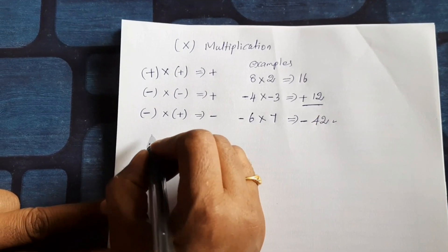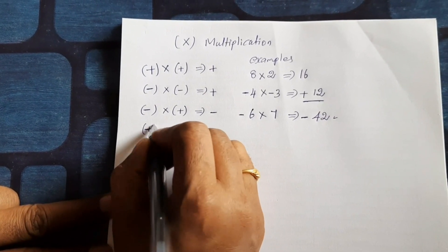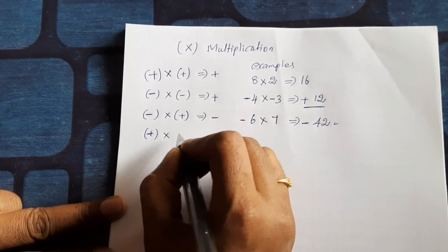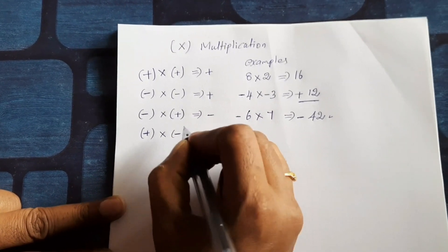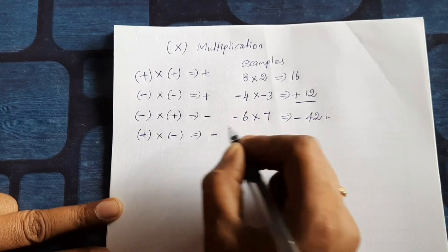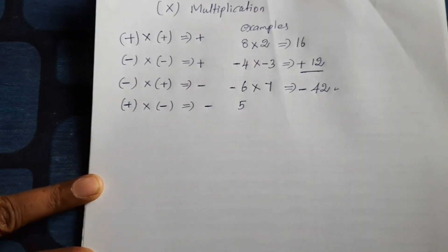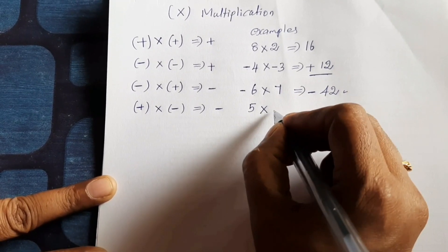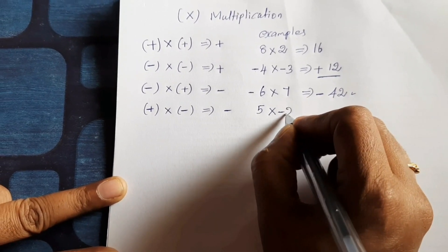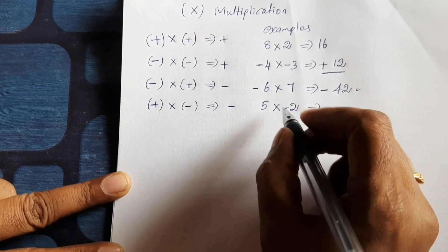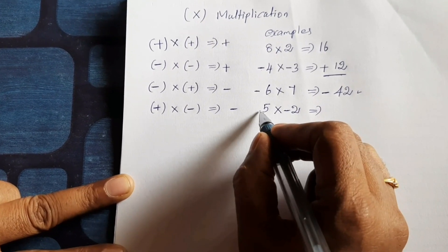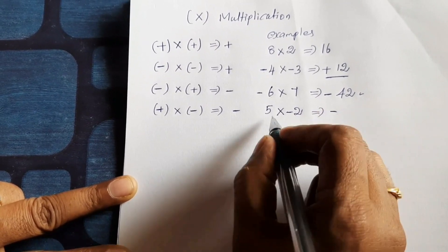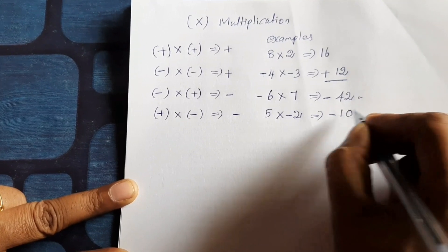Next, plus, both are same, plus into minus gives minus. Now 5 into negative 2 equal to minus into plus minus, 5 into 2, 10.